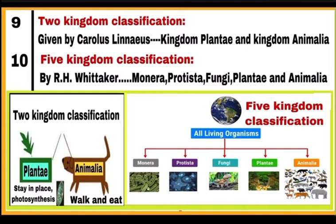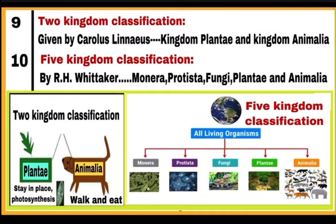Two-kingdom classification: given by Carolus Linnaeus, where all organisms were grouped into kingdom Plantae and kingdom Animalia. Those who cannot move and can make food by photosynthesis were included in kingdom Plantae, and those who can move and depend on others for food were included in kingdom Animalia. Five-kingdom classification: given by R.H. Whittaker in 1969, where organisms were put in five kingdoms — Monera, Protista, Fungi, Plantae and Animalia.